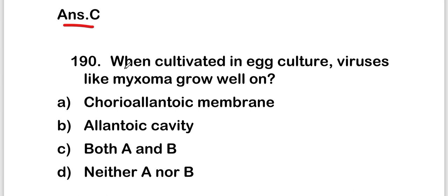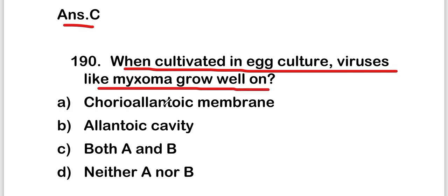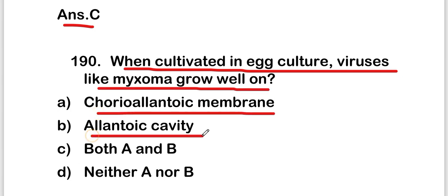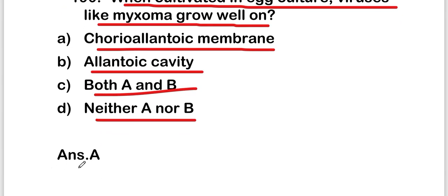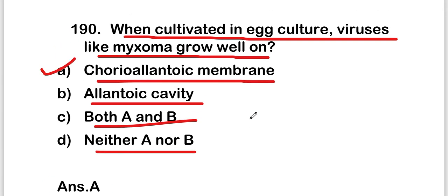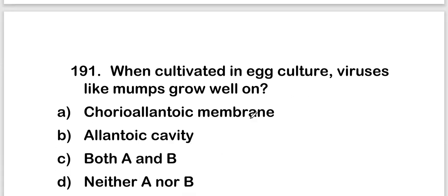The next question: when cultivated in egg culture, viruses like myxoma grow well on — the right answer is option A — chorio-allantoic membrane. When cultivated in egg culture, viruses like myxoma grow well on the chorio-allantoic membrane.